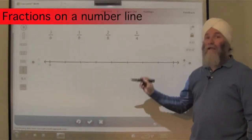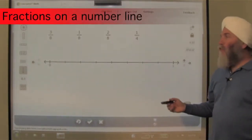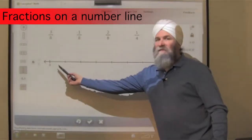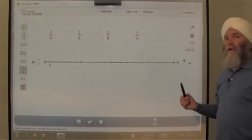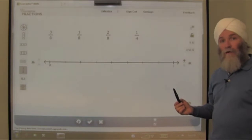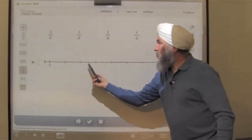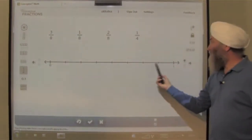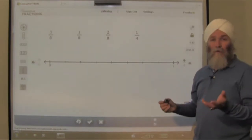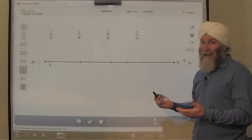We're going to place these four fractions on this number line. Right now the number line takes us from 0 to 1, and it's divided into equal parts. How many? 1, 2, 3, 4, 5, 6, 7, 8. It's divided into equal parts. Each equal part is an eighth.